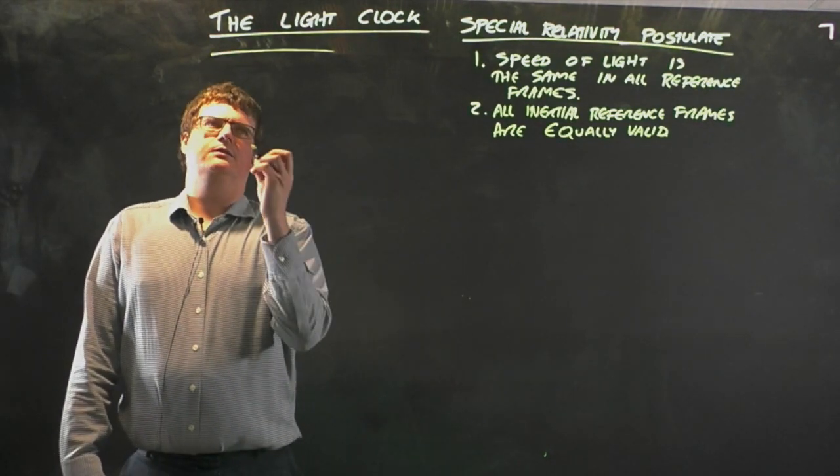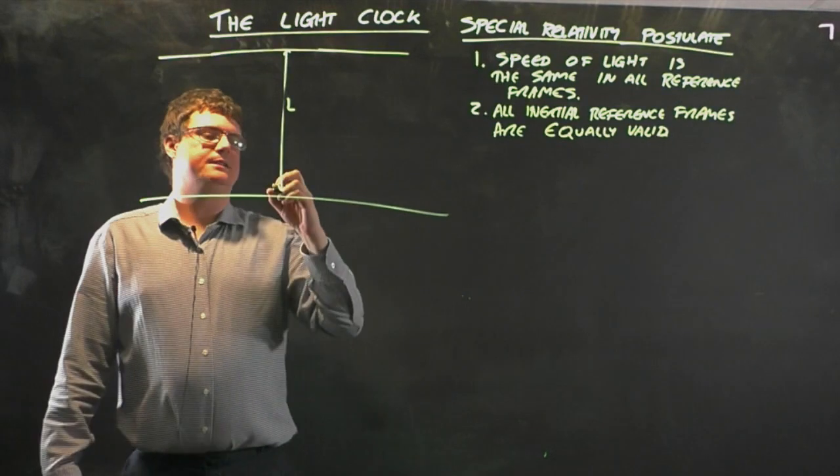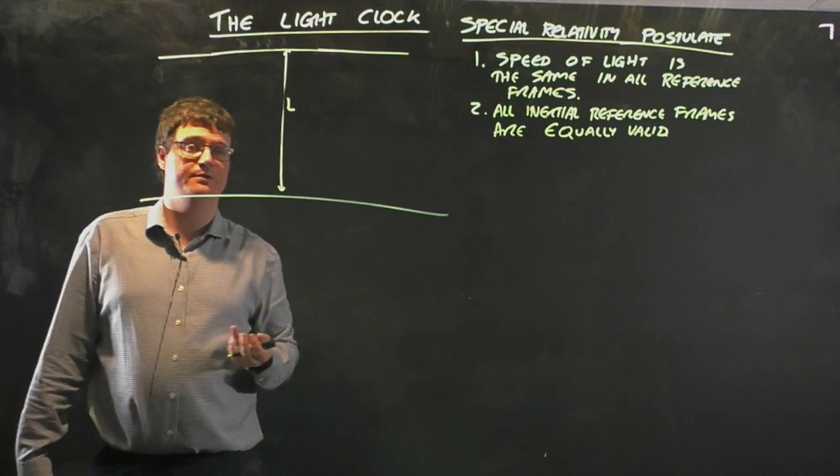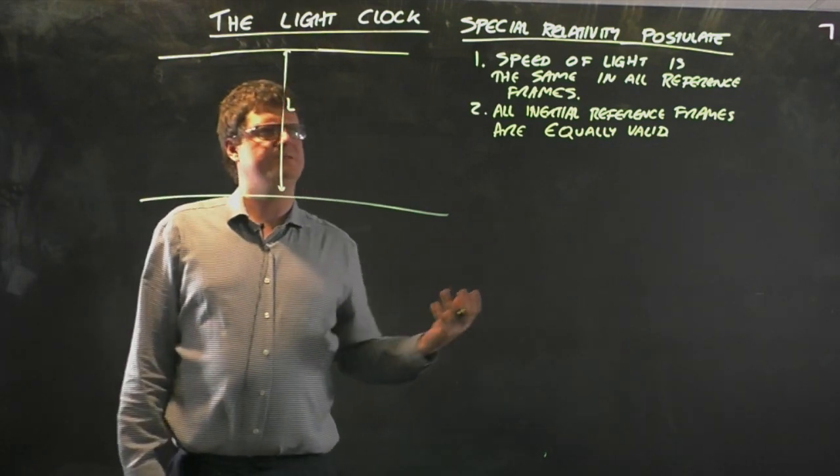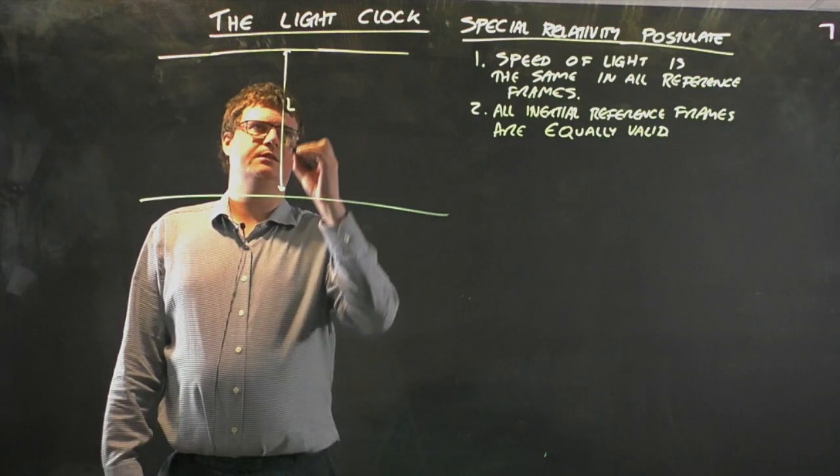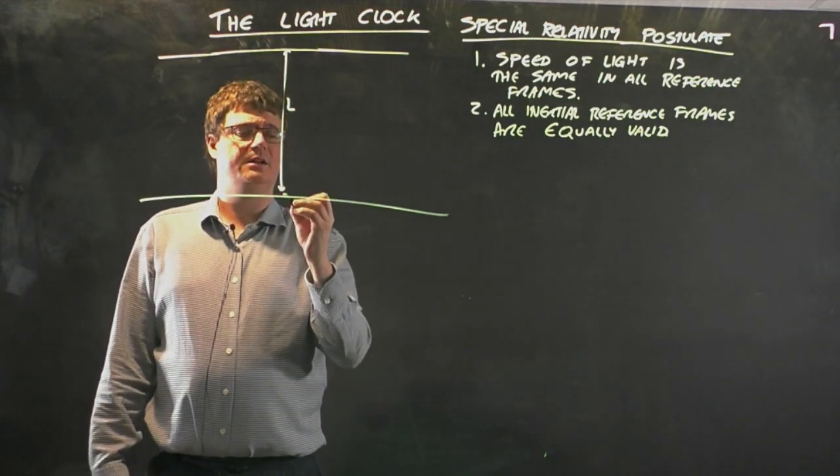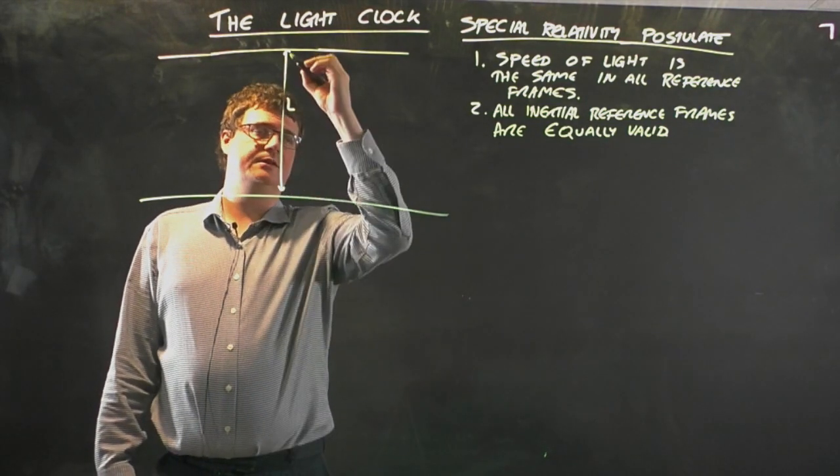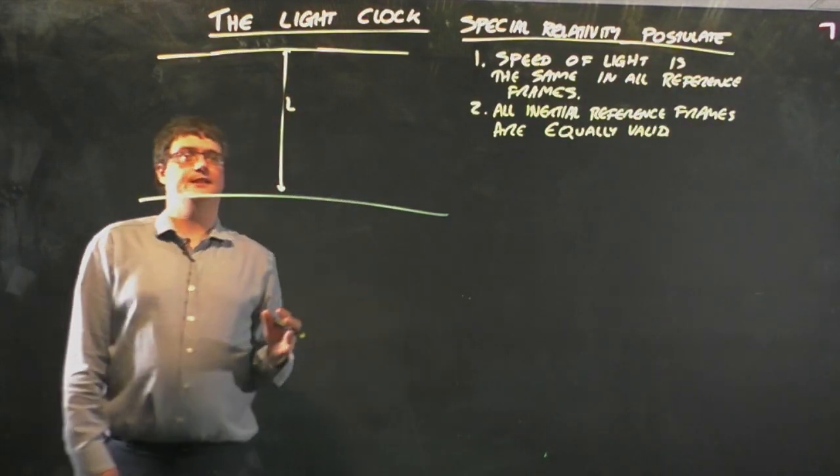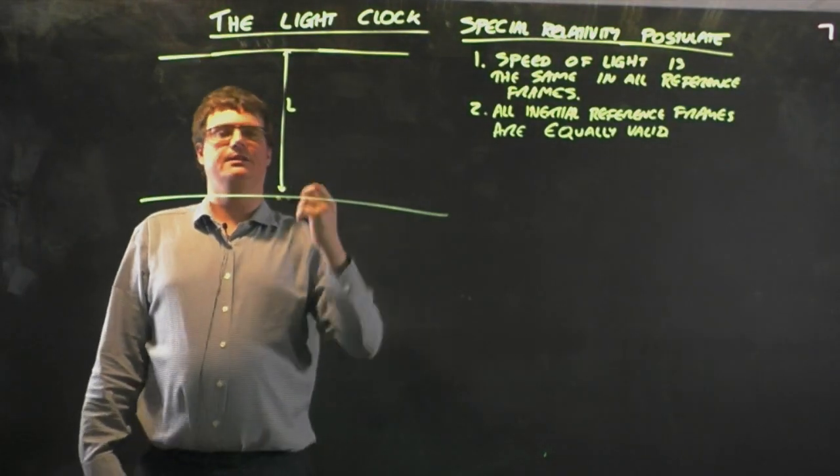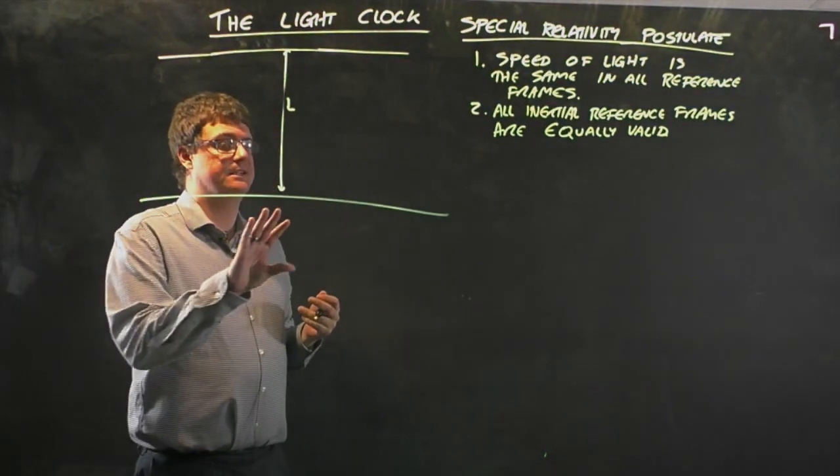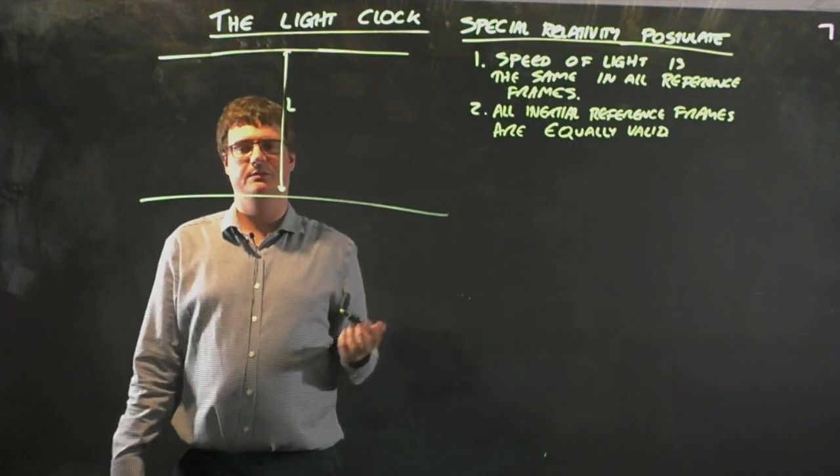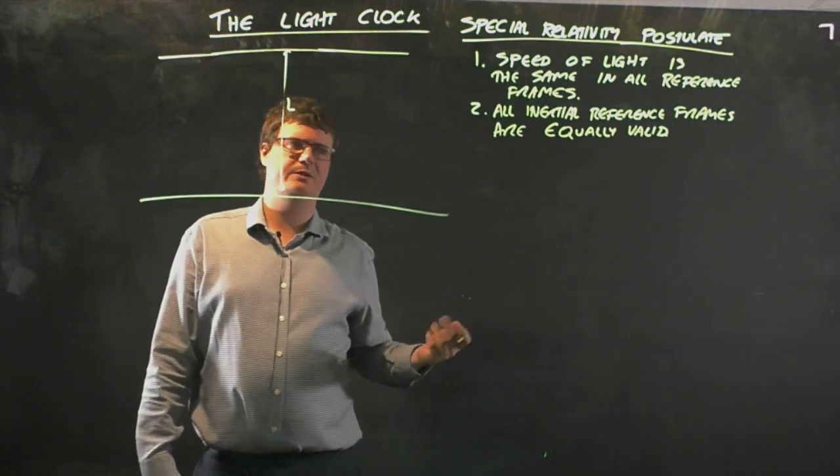So let's look at a light clock. Let's take two mirrors some distance L apart, and we'll set L to be 150 million meters. Light leaves here, goes up to the top and comes back down. That tick is going to happen every time the light bounces off the bottom mirror. That tick takes one second. These mirrors obviously can't actually exist; this is what Einstein would call a Gedanken experiment, a thought experiment.